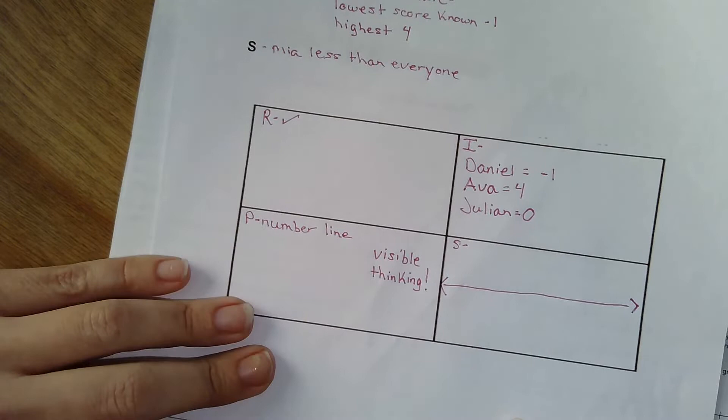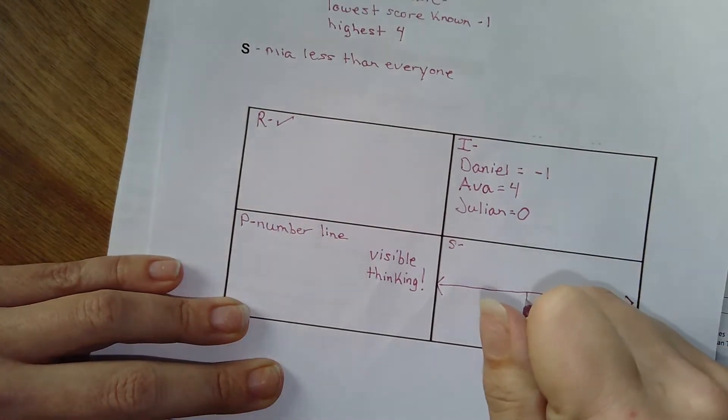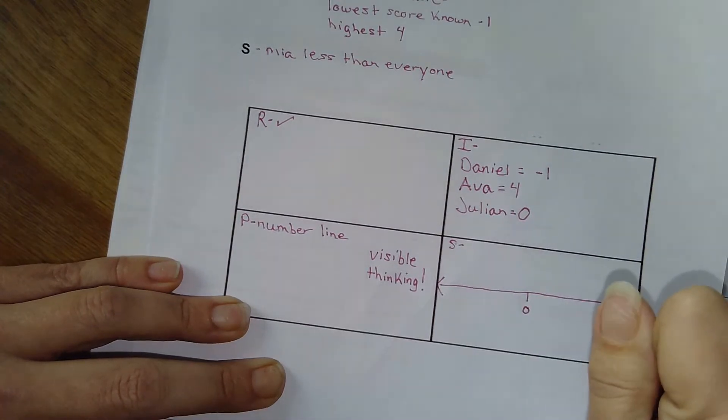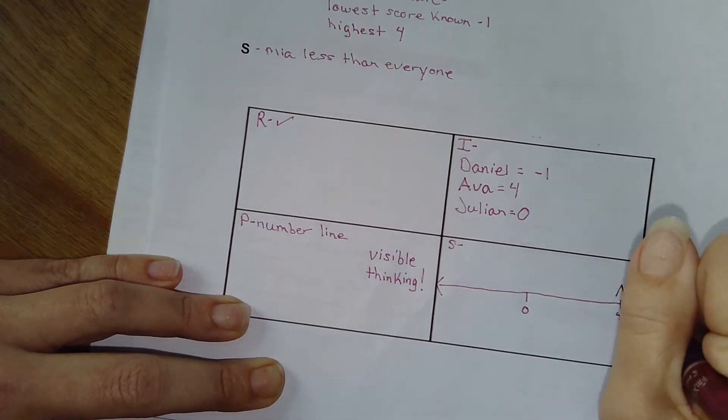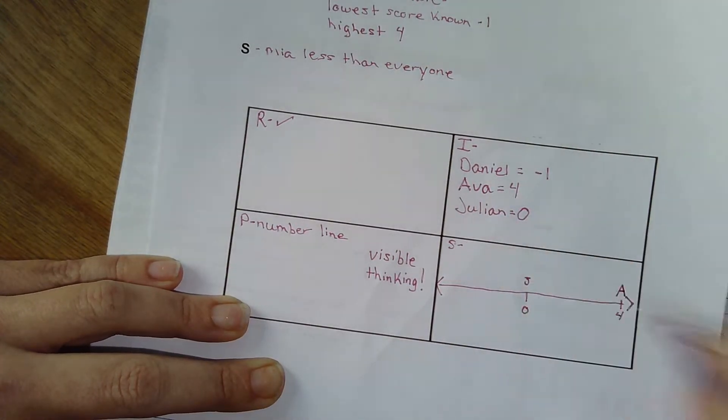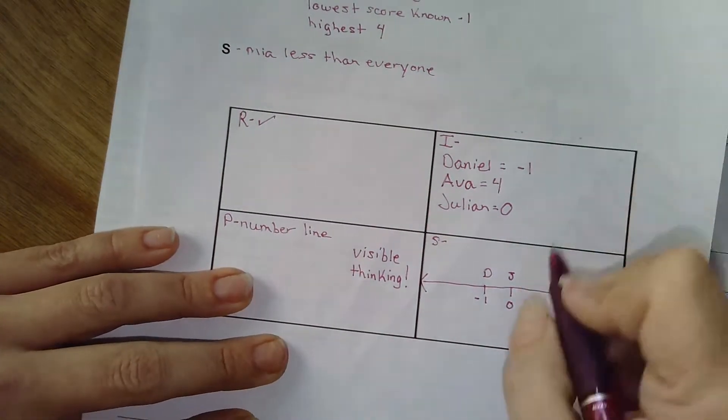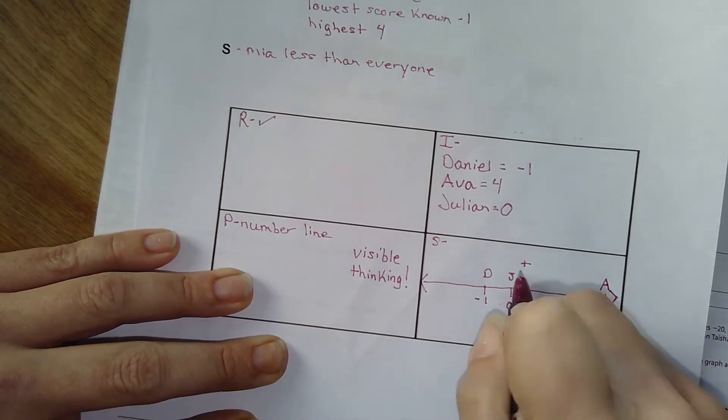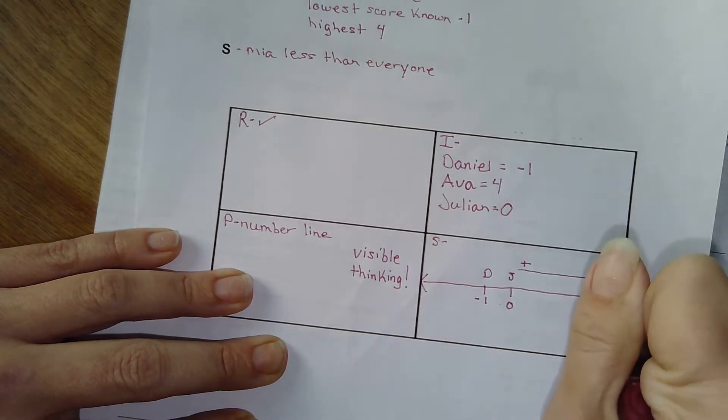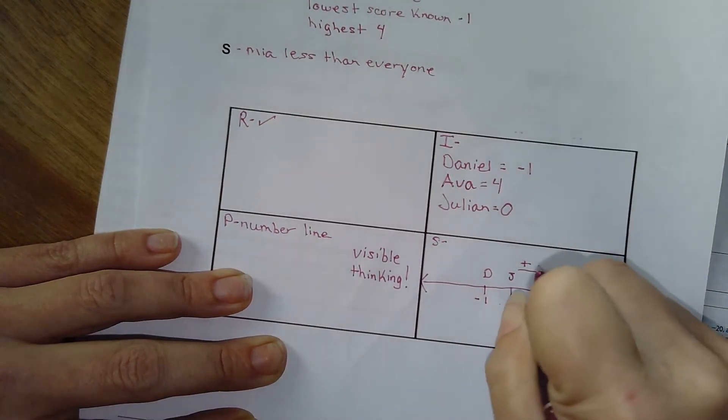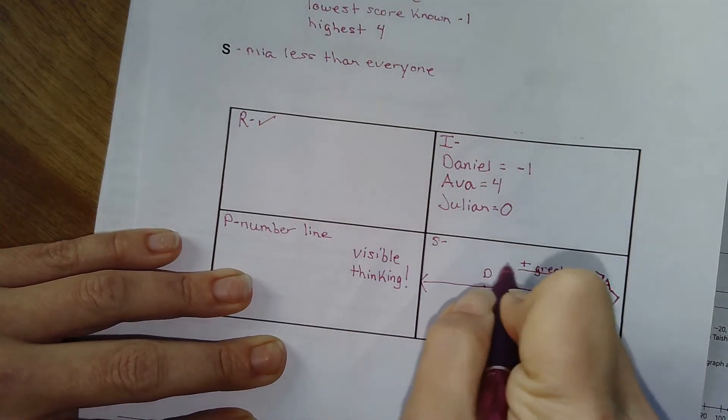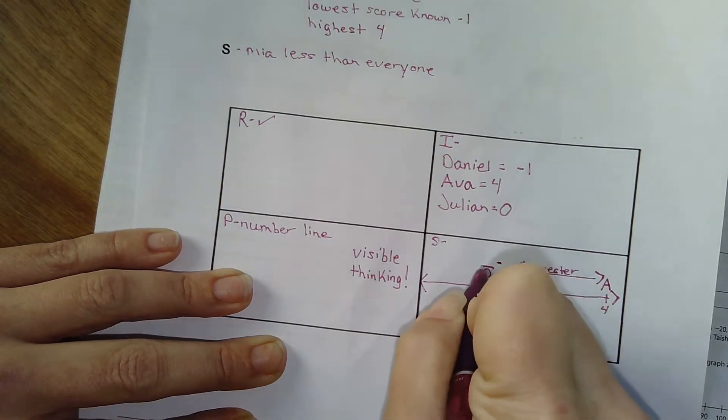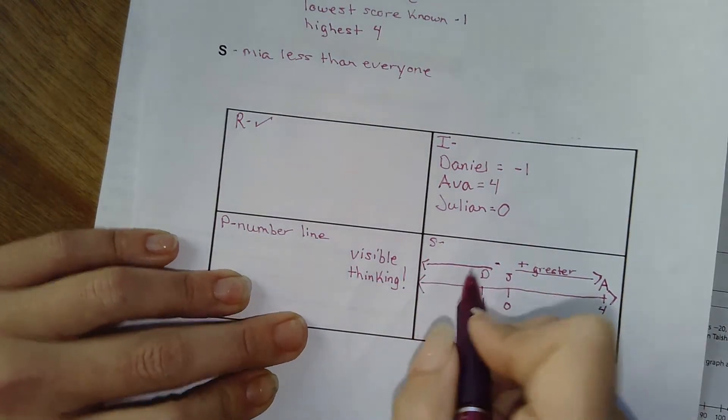Here we go. And to solve it, I'm going to do my zero. I'm going to put my score for Ava here. I'm going to put Juan's score here. And Daniel is at a negative one. I'm going to put his here, right? Well, what else do I know? I know that anything to the right of the zero is positive. And I know that to the right, it goes greater, right? I know that to the left of my zero, it's negative.